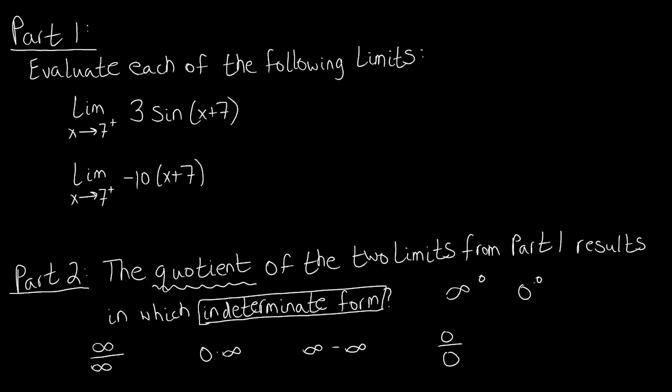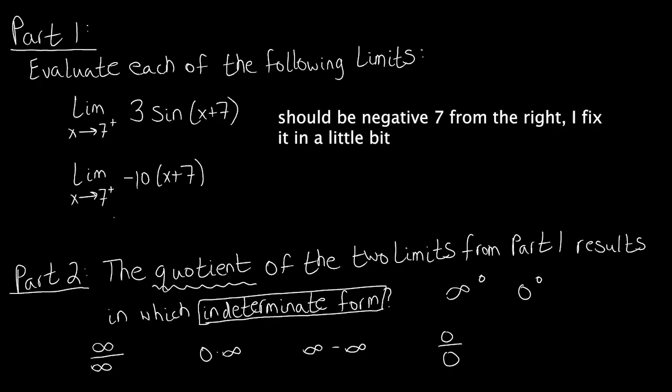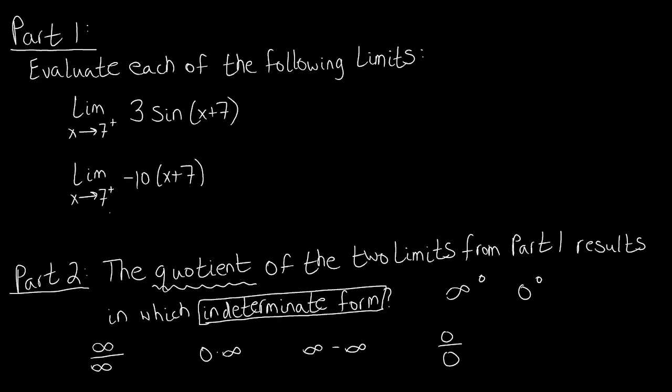How do we know that a limit is an indeterminate form? When we're presented with a question, we need to pass to the limit and actually plug in the value that x is approaching. We plug that into our quotient, product, difference — whatever we have — and see if we return one of these forms. If we do, we can employ L'Hopital's rule, which lets us take derivatives of each piece individually and re-evaluate our limit to get a result that actually makes sense and is not indeterminate.